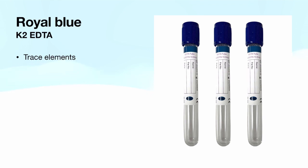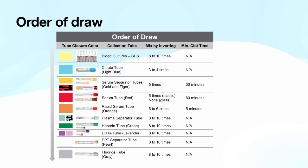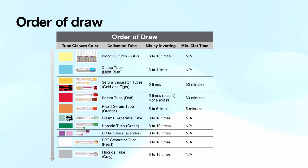The royal blue tube contains potassium EDTA at 10.8 mg and is used for trace elements like selenium and chromium testing. You also have to remember the order of draw. First, draw the blood culture tubes, then the citrate tube, after that the plain or gold or red tube, then heparin, EDTA, and finally the fluoride tube.